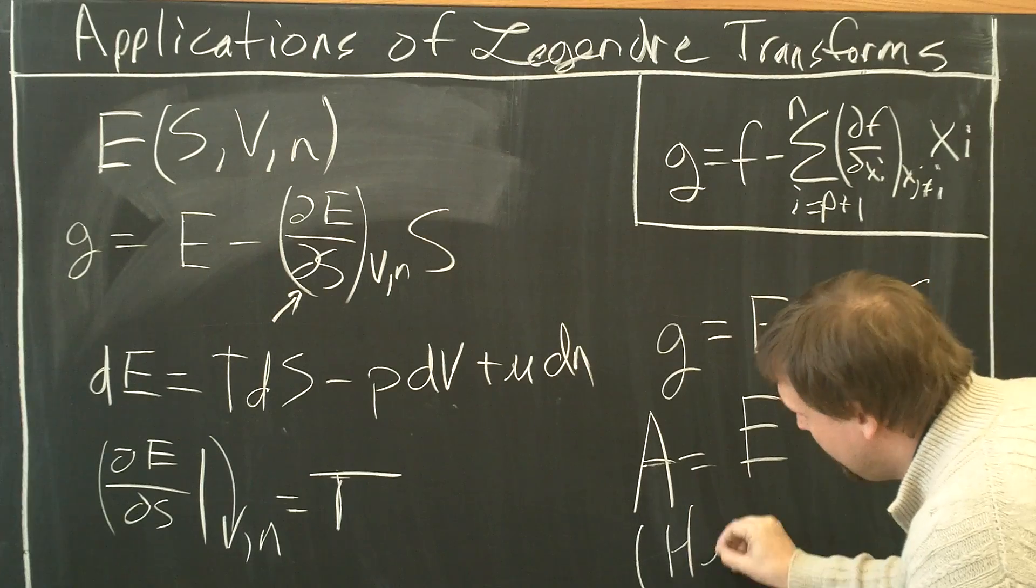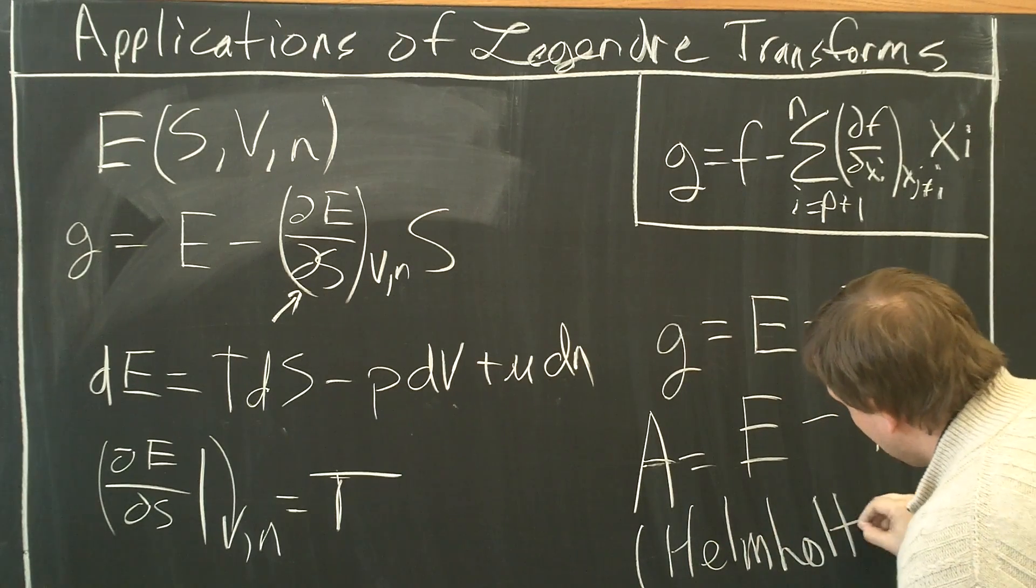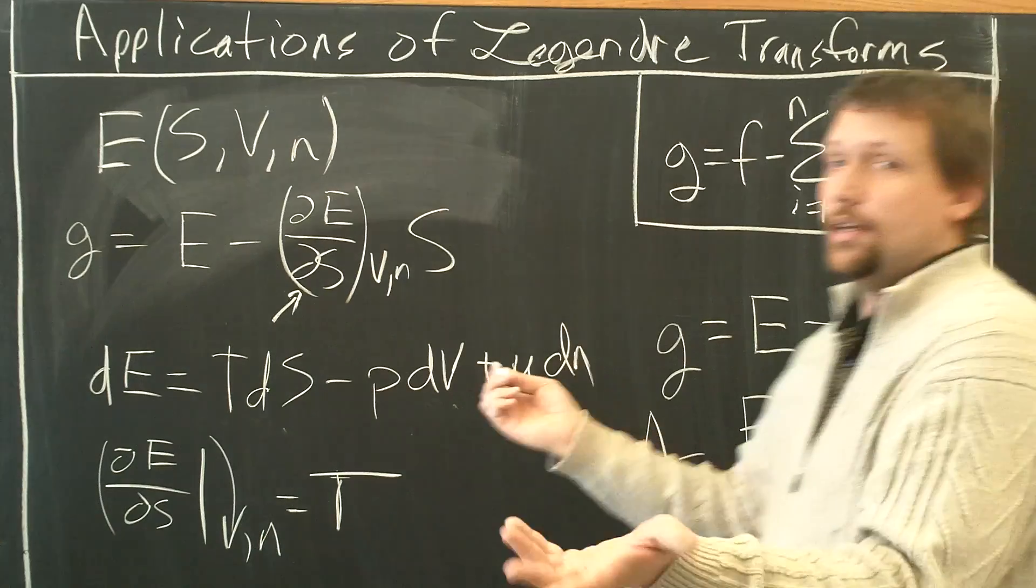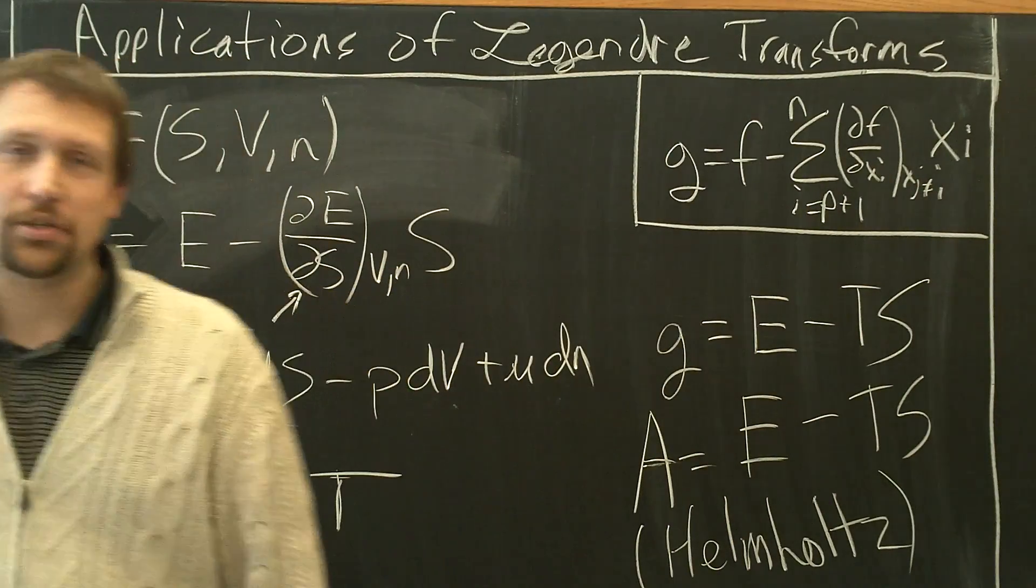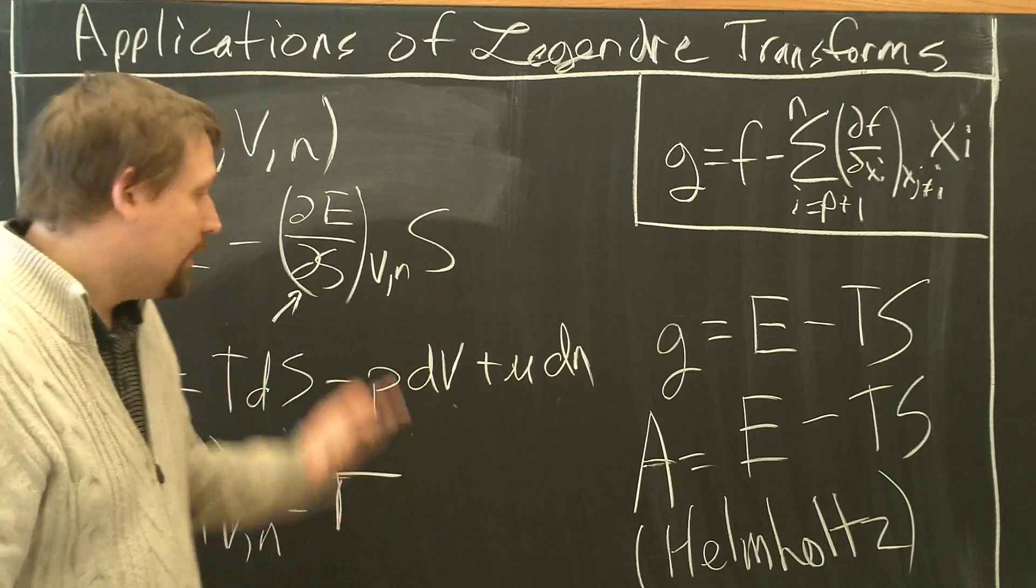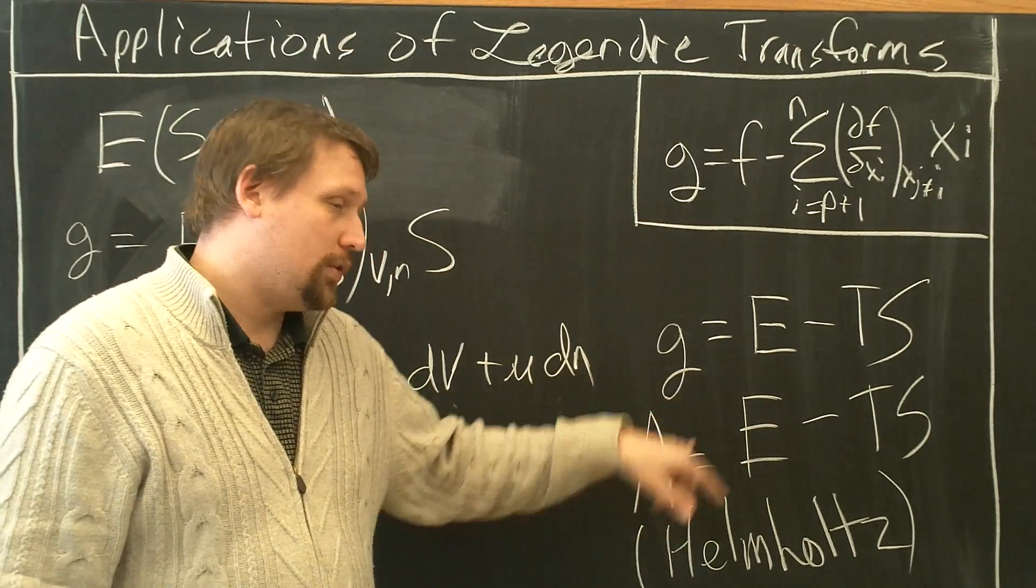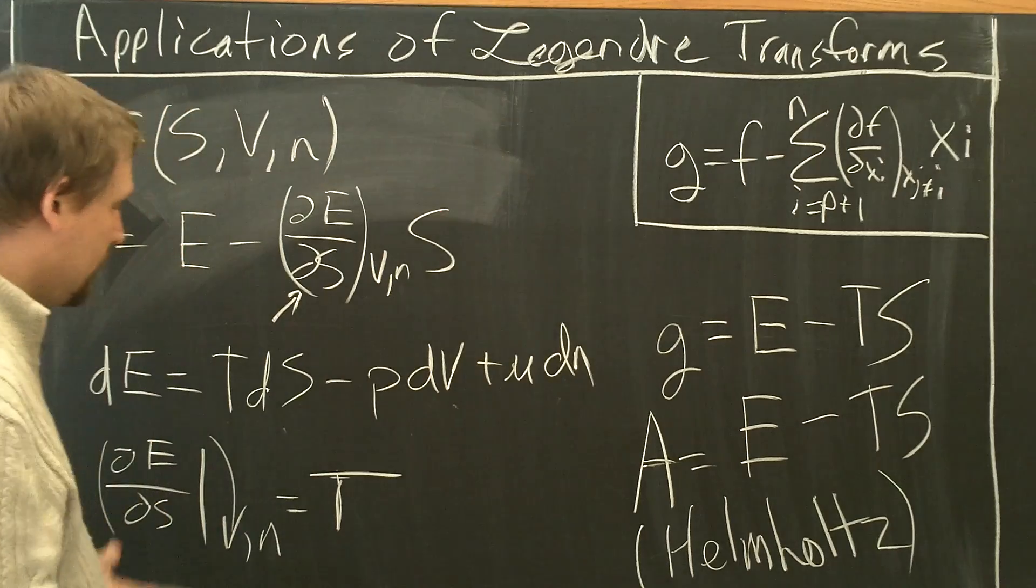I'm going to write down here, Helmholtz. So now you apply the Legendre transform to energy. We're taking the transform of energy with respect to entropy and arrived at a new state function, the Helmholtz free energy, which is E minus TS.